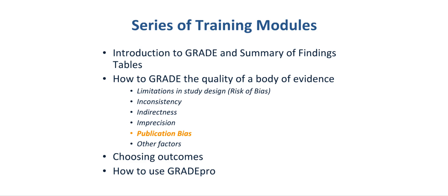This module is part of a series of training modules that include an introduction to the GRADE Approach and Summary of Findings Tables, how to grade the quality of a body of evidence, focusing on risk of bias, inconsistency, indirectness, imprecision, publication bias, and other factors that lead to upgrading the quality of evidence. It includes a module on choosing comparisons and outcomes, and how to use the GRADE Profiler, also called GRADEpro.